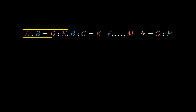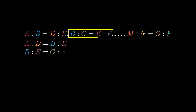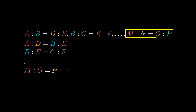Using the previous proposition, alternate ratios are proportional, so A to D is proportional to B to E, and B to E is proportional to C to F, and so forth to M to O being proportional to N to P.